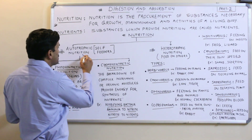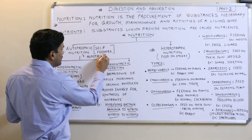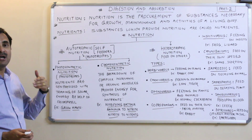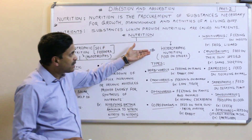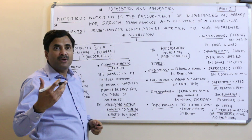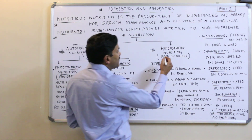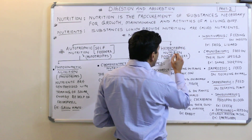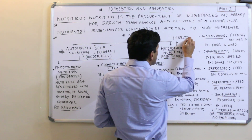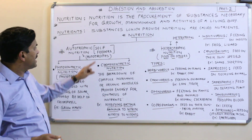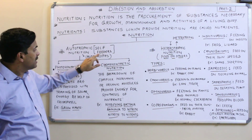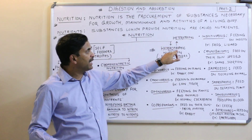Autotrophic nutrition is found in organisms known as autotrophs. Autotrophs are self-feeders — they prepare their own food and are not dependent on others. Heterotrophic nutrition is a type of nutrition in which the organism never prepares its own food; it is dependent on others. Organisms with heterotrophic nutrition are called heterotrophs.